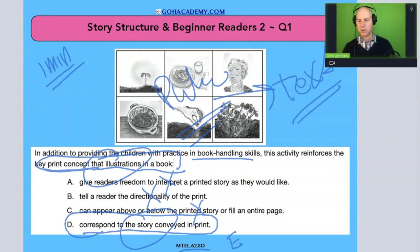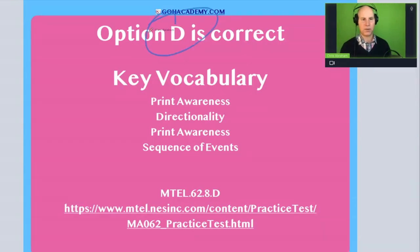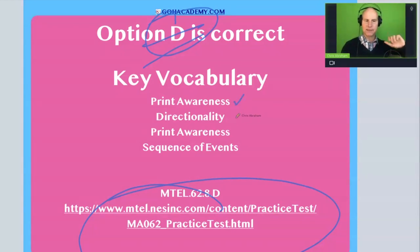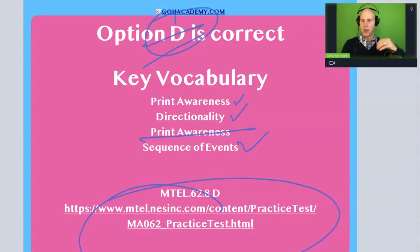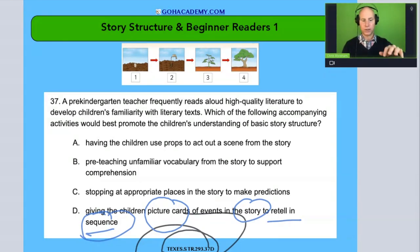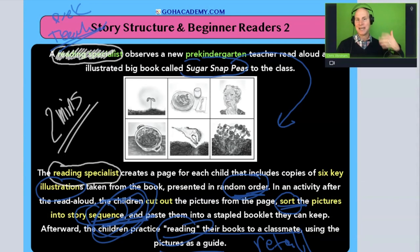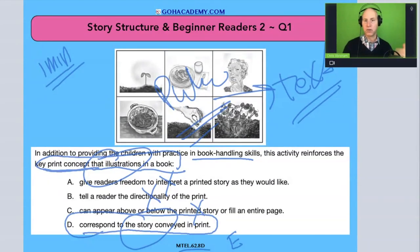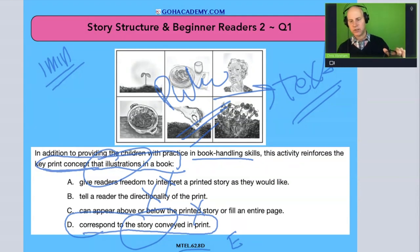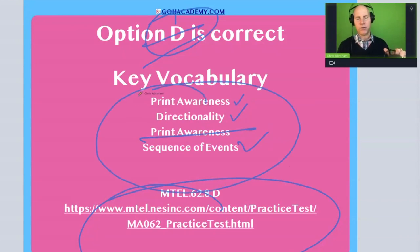Those are two great questions. This one from the reading specialist exam — the answer is D. You get a review of print awareness concepts: directionality, reading left to right, and sequence of events. We can learn a lot about story structure from the Texas exam, and about story structure combined with print awareness from this Massachusetts reading specialist exam. We can learn from problems throughout the United States just by looking at these scenarios.